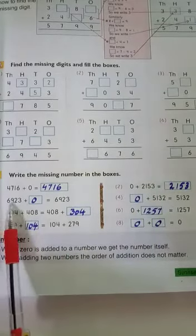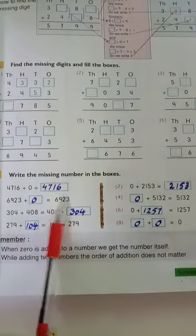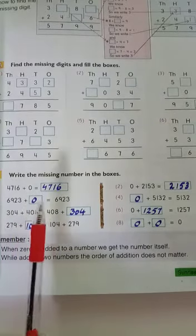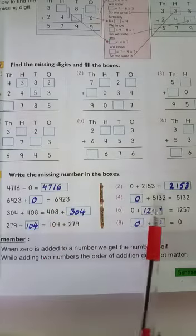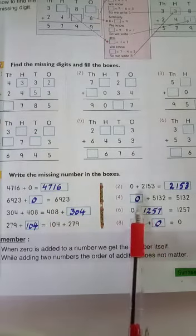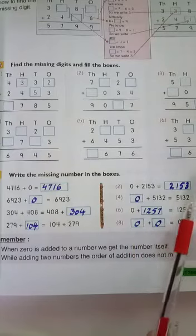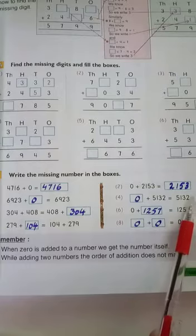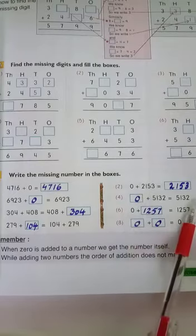Question 3 mein dekhein: value pehle di gayi hai aur poocha gaya hai ki box mein kya aayega — answer mein unhone wohi value dobaara likh di hai. Iska matlab hai ki hum ismeín zero add karein to value answer mein usi tarah se saamne aa jaayegi. Number 4 mein dekhein: value ke andar box plus kiya gaya hai. Box mein kya hona chahiye? Zero. Kyunki answer mein wohi value dobaara hum dekh rahe hain — 5132. Isliye iska matlab hai ki zero is value mein plus kiya gaya tha, to hamare paas yahi answer aaya.